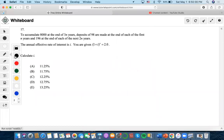Hi, so the next question is to accumulate 8,000 at the end of 3N years. So they want to make this fancy, but we know accumulation is involved.